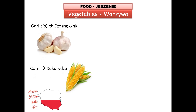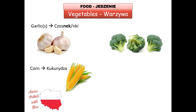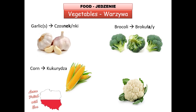'Kukurydza' is our next 'warzywo' — corn. 'Warzywa' is plural, 'warzywo' is singular. So 'kukurydza'. And the very healthy one — broccoli — that's 'brokuł', 'brokuły'. This one is rather popular in Poland; I haven't seen much of it in, for example, Ireland when I was there.